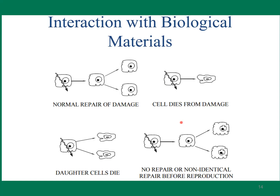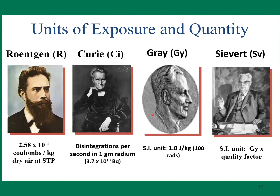These are some diagrams of the damage. Radiation units: these are the famous faces of scientists on whose names the units are defined. Roentgen measures exposure. Curie measures radioactive source activity. Gray measures absorbed dose of radiation. Sievert includes the quality factor.